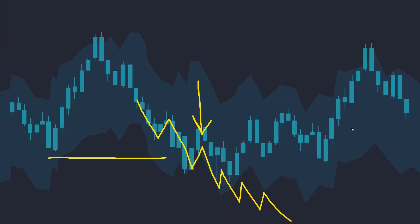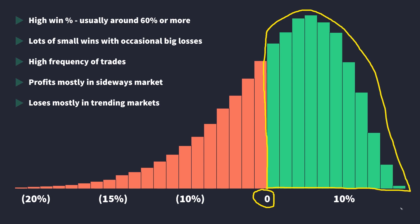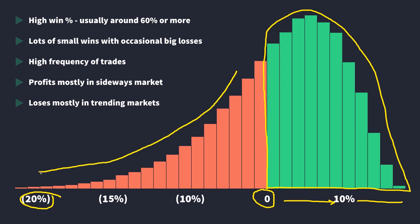Let's have a look at a risk profile and the characteristics of a typical mean reversion trading strategy. The graph on the screen shows distribution of profits and losses. As visible on the graph, there are more profitable trades than losing ones — the green part of this graph is bigger than the red one. However, this goes hand-in-hand with the fact that profitable trades are typically smaller than losing trades. Most winners are between 0% and 10%, but losing trades are bigger, with some outliers at minus 20% or more. This is called a negative skew, meaning that the profit distribution is skewed to the negative area, which translates into having lots of small winners with occasional big losses.